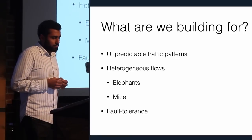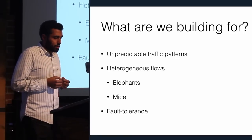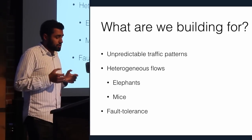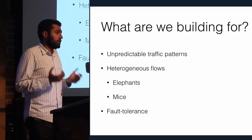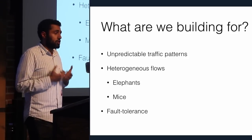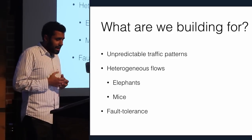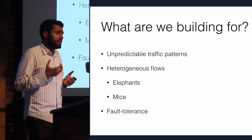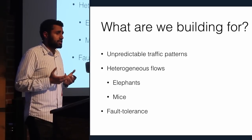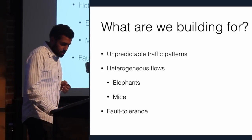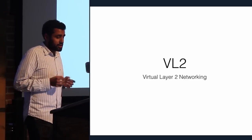We want to build for a data center network with unpredictable traffic patterns and heterogeneous applications. Those heterogeneous applications produce two kinds of flows primarily: elephant flows, which are large flows, and mice, which are things like RPCs. Additionally, we want fault tolerance — if an individual device dies in the network, it's not going to cause an interruption of the flows. With that, I'll talk about the VL2 topology and the actual implementation they used.